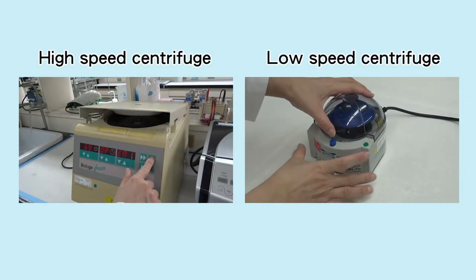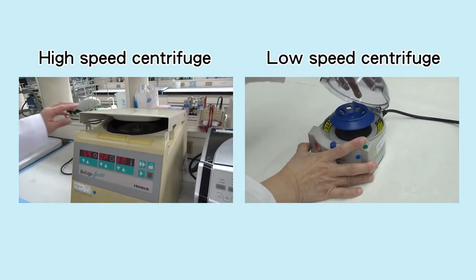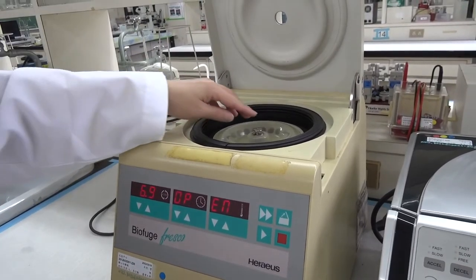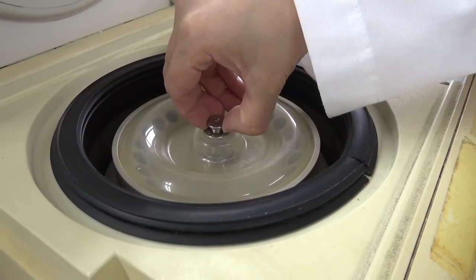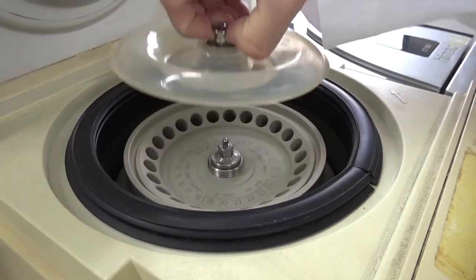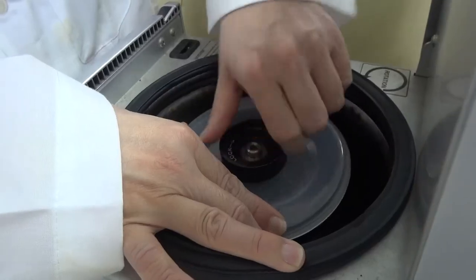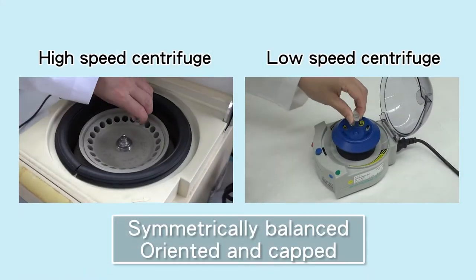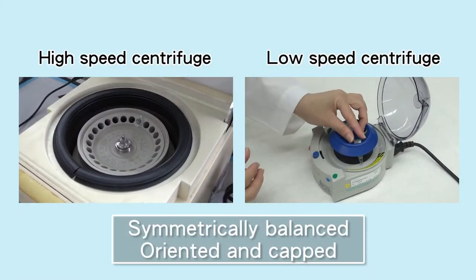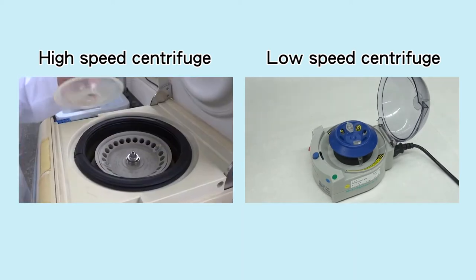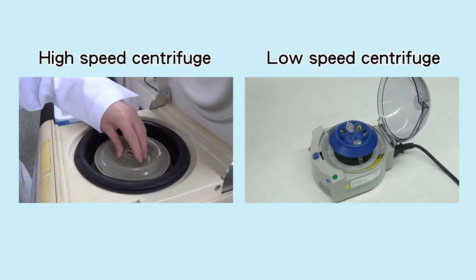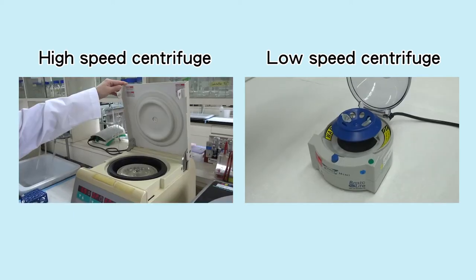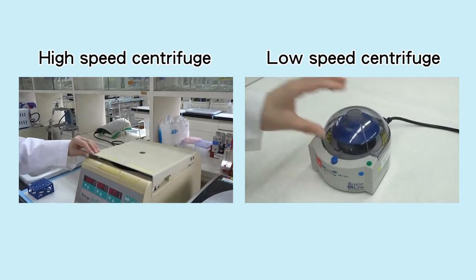After preparation, press the open lid button to open the centrifuge's top lid. If it is a high-speed centrifuge, the rotor's cap must be subsequently opened by pressing the center or rotating the cap, depending on the model. Then place the centrifuge tubes according to the mnemonic. If it is a high-speed centrifuge, the rotor's cap must first be capped on. Lastly, the centrifuge's top lid is closed.